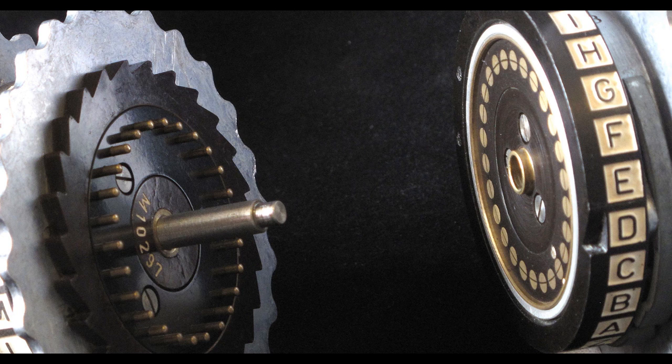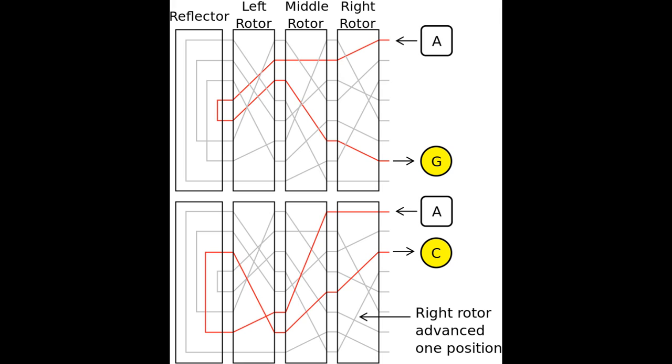A third rotor, wired differently still, would do the same thing again. On certain Enigma machines — the three-rotor machines — the signal would then pass through what was called a reflector, entering back into the third rotor from the other direction at a completely different point. That's another transformation step, and then it would go back through all the rotors in reverse. So it actually goes through seven transformation steps, meaning the number of possibilities is 26 to the seventh power.